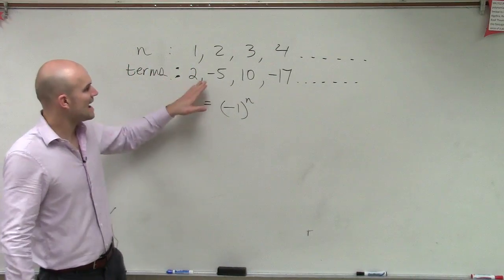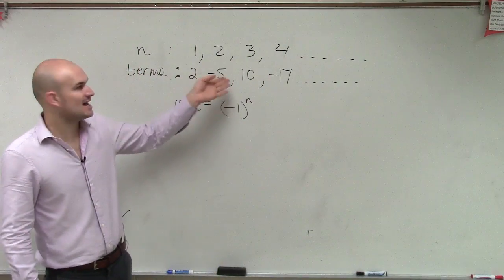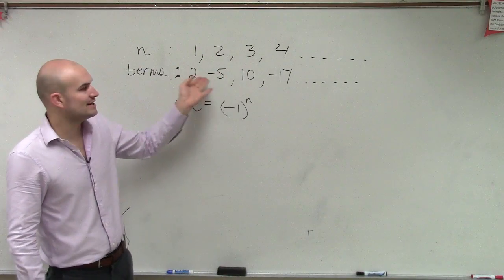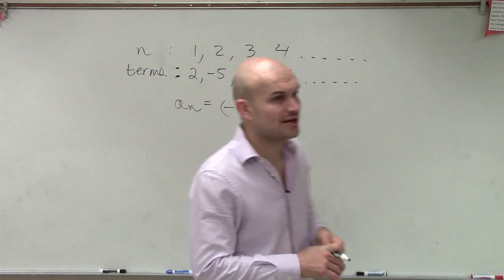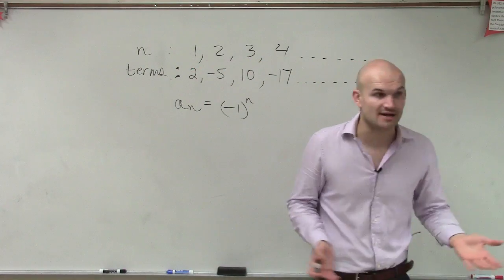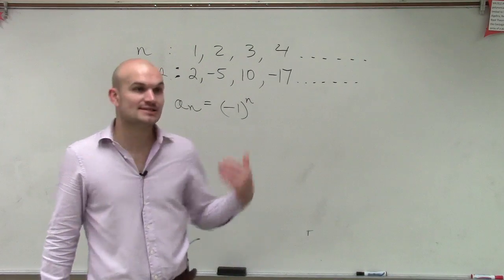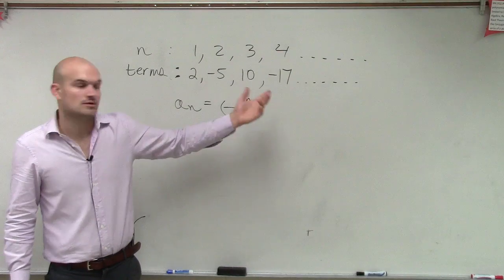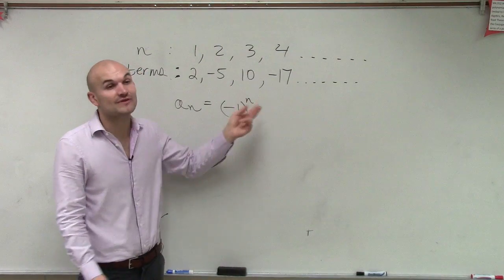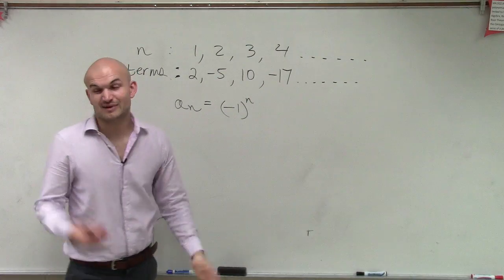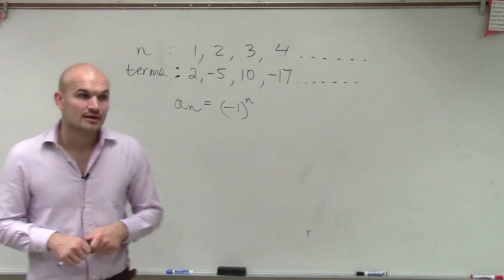Now what we want to do is look at what's happening to our values — how am I going from one term to the next? The first thing I always like to look at is arithmetic relationships: what am I adding or subtracting? From 2 to 9 to negative 5, I'm subtracting 7. But do I subtract 7 again to get to 10? No — now I'm adding 15. So we're not adding or subtracting the same amount to go from one term to the next.